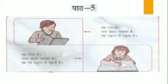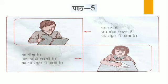Lesson 5. Rom Hai — He is Rom. He is the boy. His name is Rom. About him, there are a few sentences. Rom Hai — He is Rom. Rom Chota Laduka Hai — Rom is a small boy.